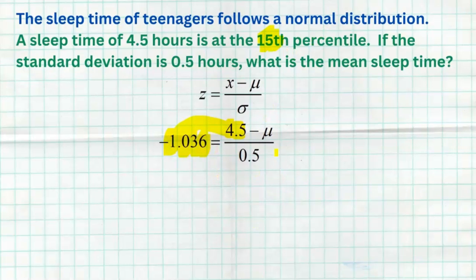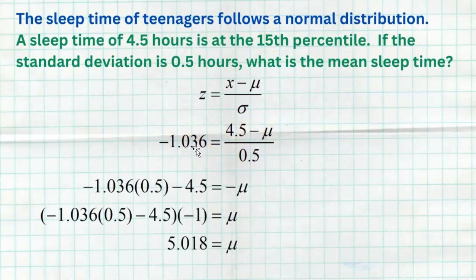Now we use algebra. Multiply 0.5 over to the left side, then subtract 4.5 — but be careful, that leaves a negative on mu. Multiply both sides by negative one to undo the negative, and we get a mean of 5.018 hours as the average sleep time in this population, where the standard deviation is 0.5 and 4.5 hours is at the 15th percentile.